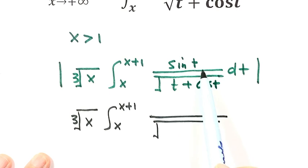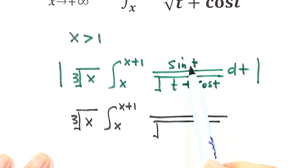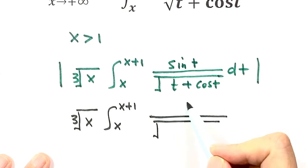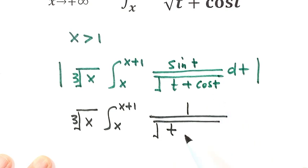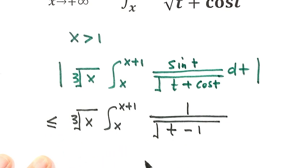Now, sin t could be positive or negative. So let's use its maximum value to replace it, which is 1. For cosine, we use its minimum value to replace it, which is negative 1. Then the denominator gets its minimum value, which makes this fraction get its maximum value. So here we have less than or equal to.